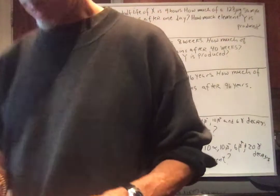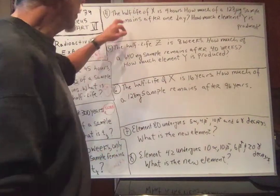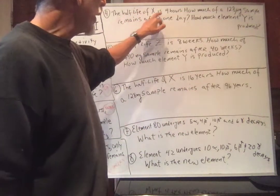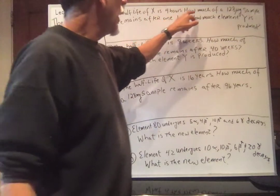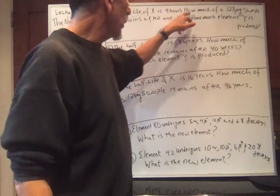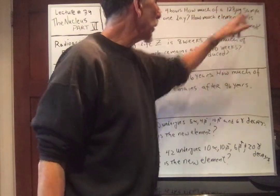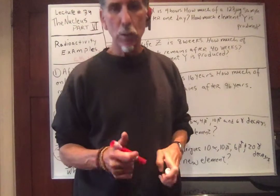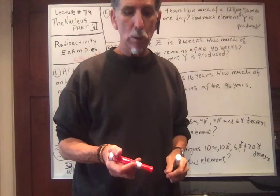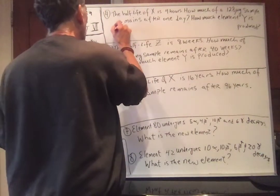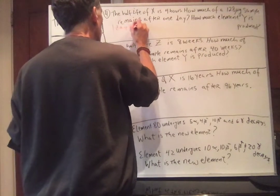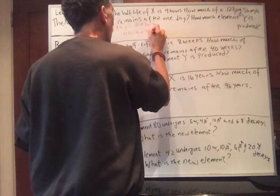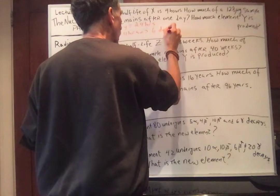Now let's do the other type of problem from the last lecture — where I give you the half-life and we find how much remains. The half-life of X is 4 hours, and we're assuming X changes into Y. How much of a 128 microgram sample remains after 1 day? 1 day is 24 hours, and with a 4-hour half-life, you've undergone 6 decays — 6 half-lives.